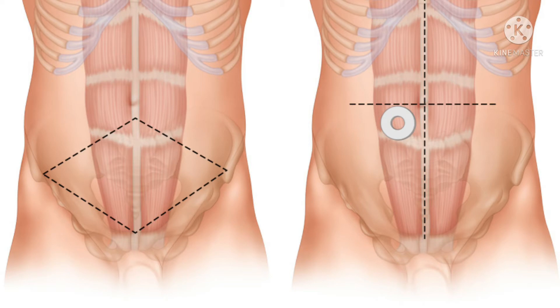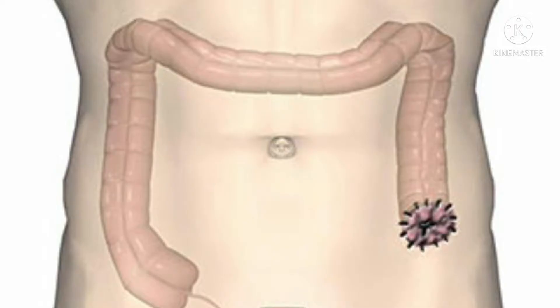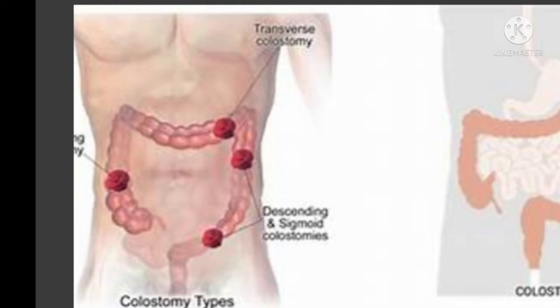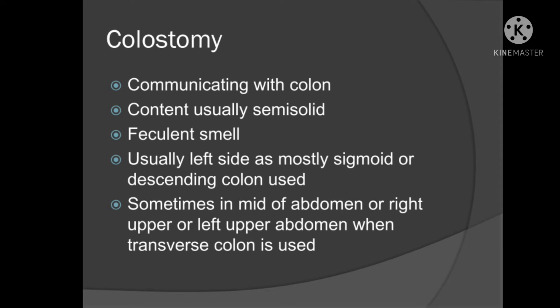By convention, ileostomy is made on the right side of the abdomen, below and lateral to the umbilicus, through the rectus muscle. Colostomy is usually on the left side because it is made from the descending colon or sigmoid colon. Sometimes you may come across a colostomy in the midline, especially when it is a transverse colostomy, but otherwise colostomy is typically on the left lower abdomen.